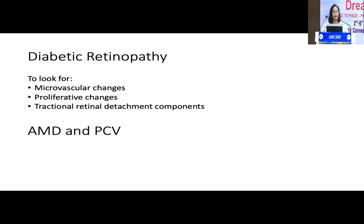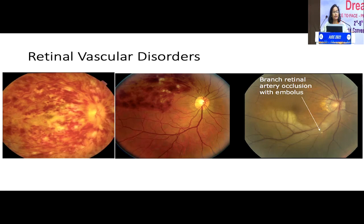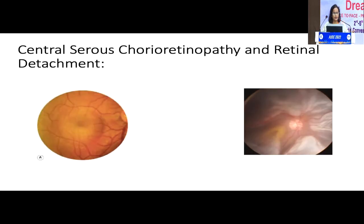In AMD and PCV, we are increasingly seeing peripheral varieties, so we need to screen for them. In retrovascular disorders, especially occlusions, we look for the extent of embolus travel. In vein occlusion, we assess the extent of hemorrhages to determine damage. For CSCR and retinal detachment, proper peripheral examination is essential — on 90D examination, people may confuse retinal detachment with CSCR. We also look for causes of CSCR, especially bilateral cases, for inflammatory causes inciting serous detachment.